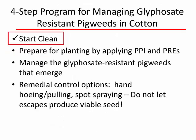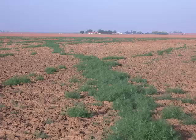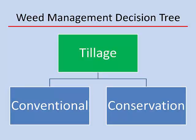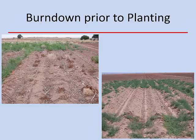Step one is starting clean. Starting clean can be accomplished pretty easily by tillage in a conventional till system — tilling shortly before planting ensures that when we plant the cotton seed, we're planting into a clean seedbed. But with the movement more towards conservation or reduced-till, strip-till, and no-till systems, when tillage is removed from the equation, we're relying on herbicides that will burn down existing weeds prior to planting.